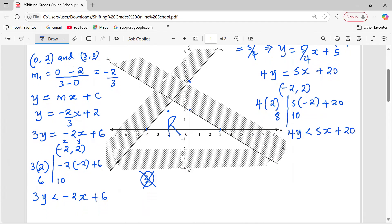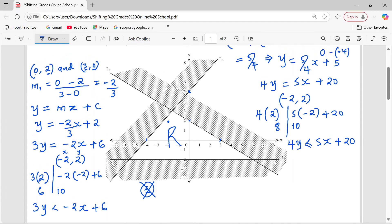So 4Y is less than 5X plus 20. But we're also supposed to remember that line 2 is a full line. Therefore, we introduce or equal to. Less than or equal to. So we are now done with the inequality that has been represented in L2.